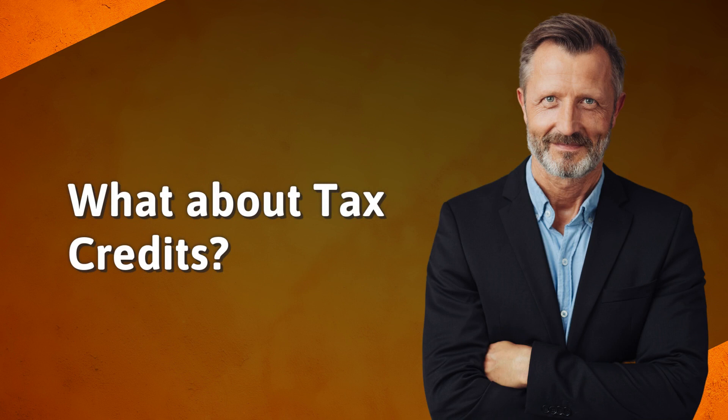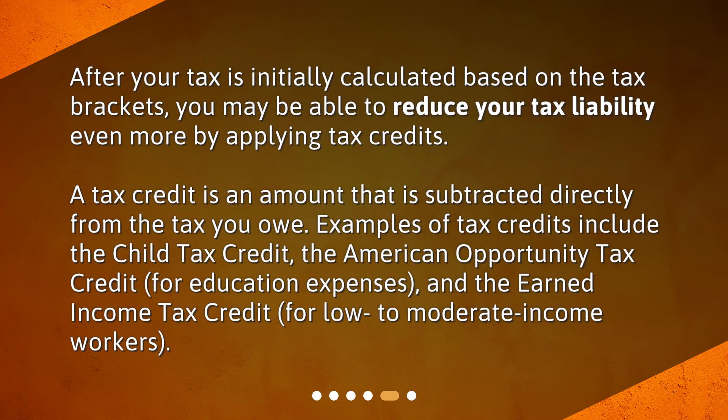What about tax credits? After your tax is initially calculated based on the tax brackets, you may be able to reduce your tax liability even more by applying tax credits. A tax credit is an amount that is subtracted directly from the tax you owe. Examples of tax credits include the Child Tax Credit, the American Opportunity Tax Credit for education expenses, and the Earned Income Tax Credit for low to moderate income workers.